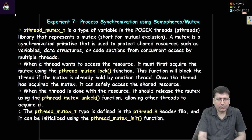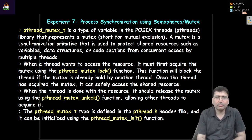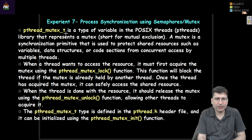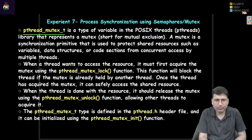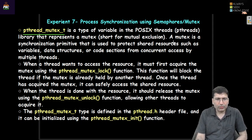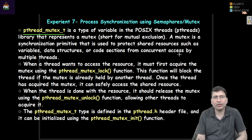In programming, when we do programming to synchronize two threads, we use mutex. Mutex has a locking and unlocking kind of mechanism. In order to define a mutex variable in C programming, we need to use the pthread_mutex_t type of variable. A mutex is a synchronization primitive used to protect shared resources such as variables, data sections, or code sections from concurrent access by multiple processes or threads.